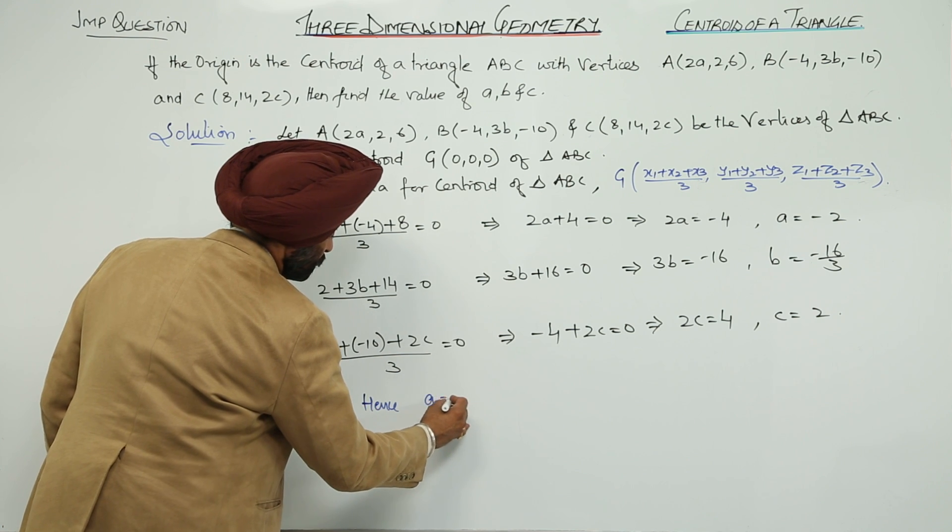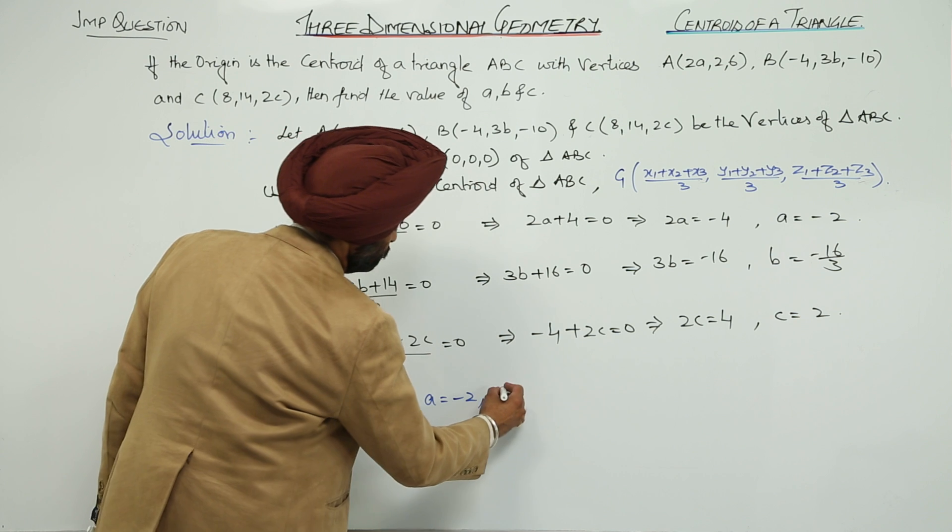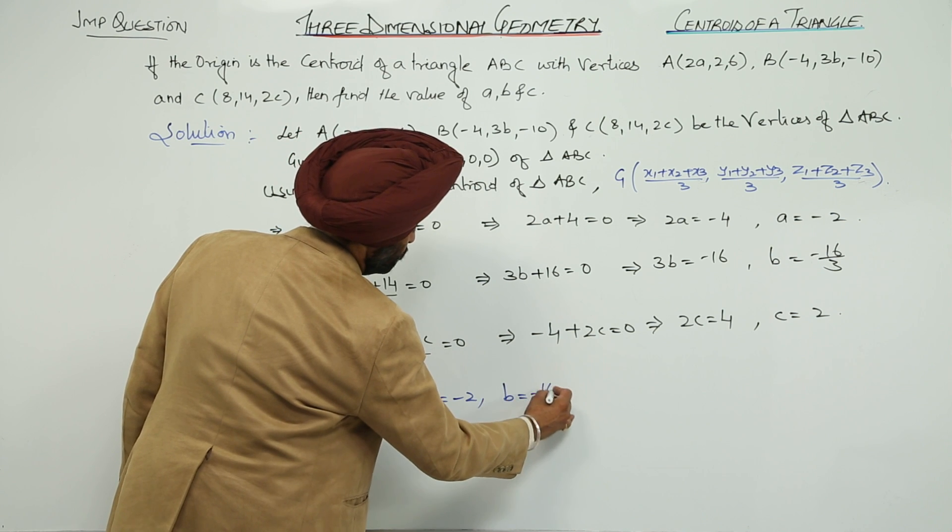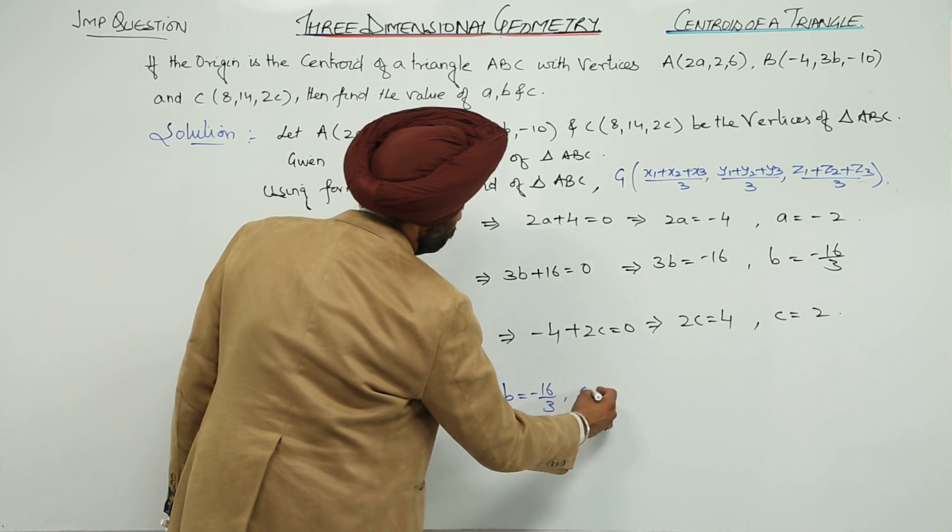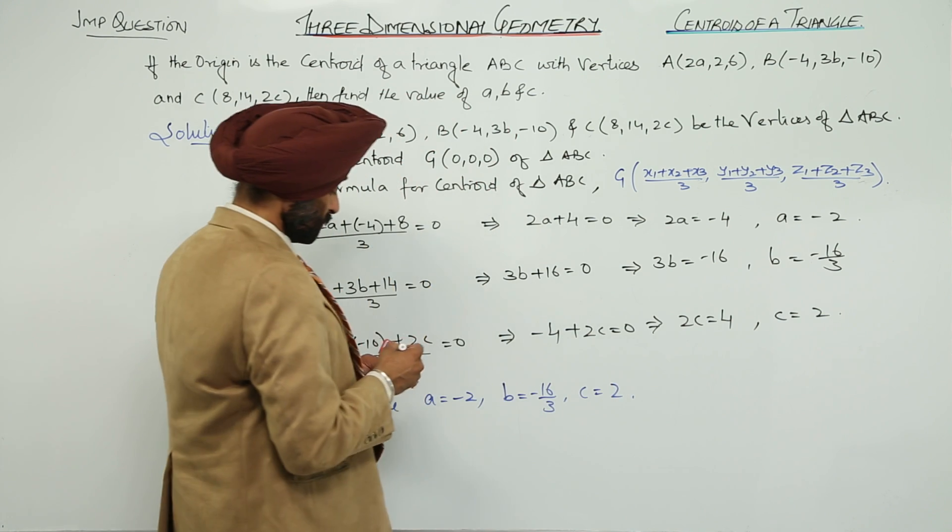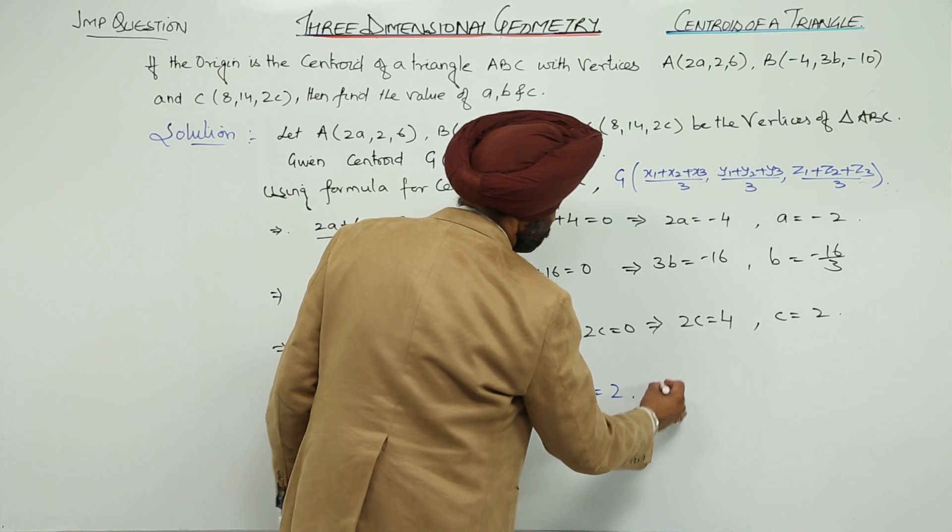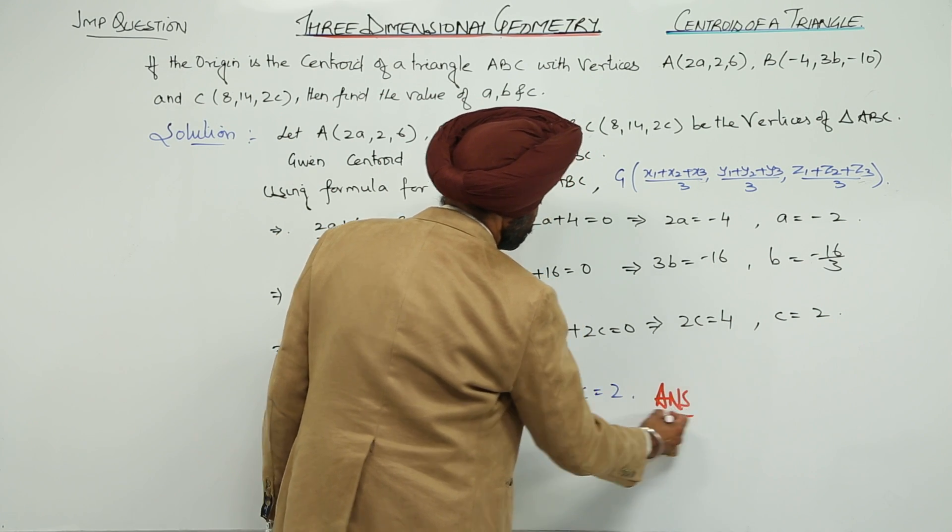Hence a = -2, b = -16/3, and c = 2 is the answer.